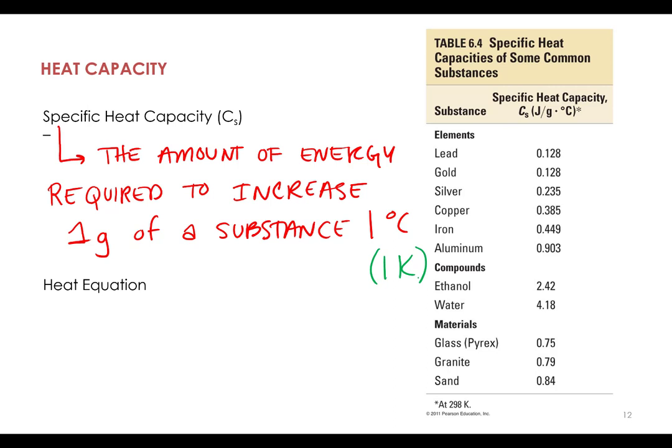Because for every one degree Celsius goes up, the temperature of one goes up, one Kelvin as well. They're not the same, of course. Zero degrees Celsius is 273 Kelvin, but going from zero to one degrees Celsius is also going from 273 to 274.